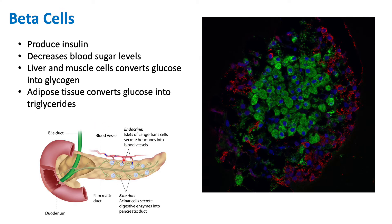Beta cells are the opposite of alpha cells — they produce insulin in times of high blood sugar levels. For example, eating a lot of ice cream raises blood sugar, which can be harmful over time. Beta cells release insulin, which travels through the bloodstream to the liver, muscle cells, and adipose tissue. Liver and muscle cells are signaled to convert excess glucose into glycogen, while adipose tissue converts glucose into triglycerides.